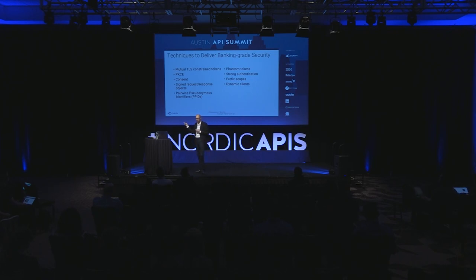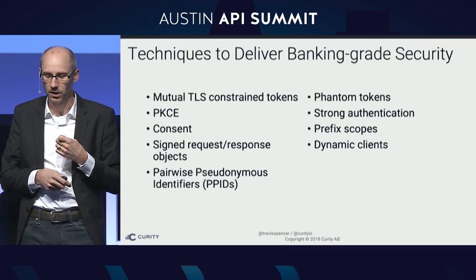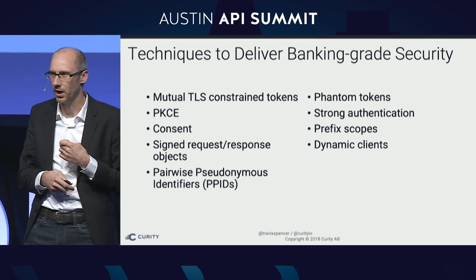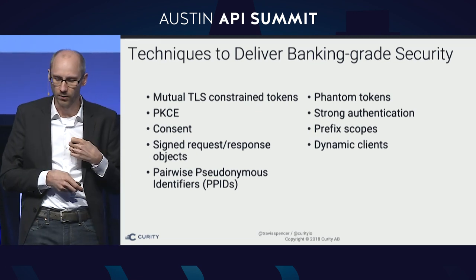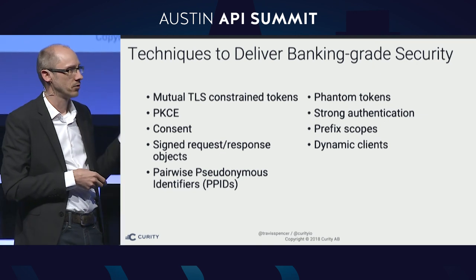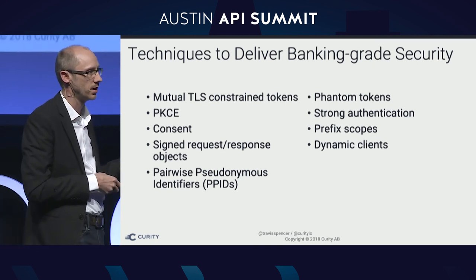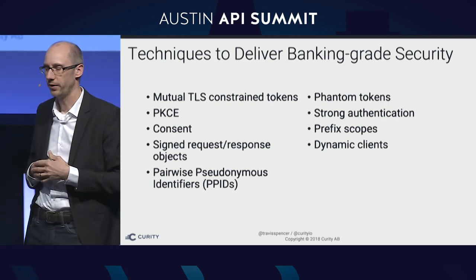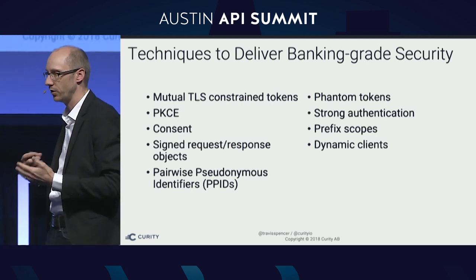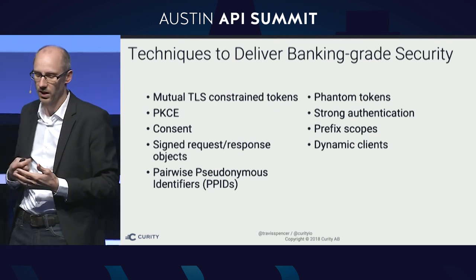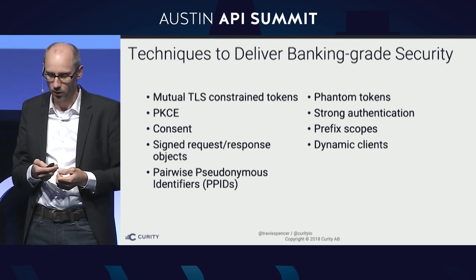The other talk I almost brought up was about phantom tokens, but Daniel and Jacob mentioned it and there are videos in the archive. Strong authentication is important for providing financial grade APIs — multi-factor and using strong credentials with identity proofing. There's also prefix scopes and dynamic clients. That's pretty much your gamut of techniques and technologies to go from commenting on blogs to financial grade APIs.